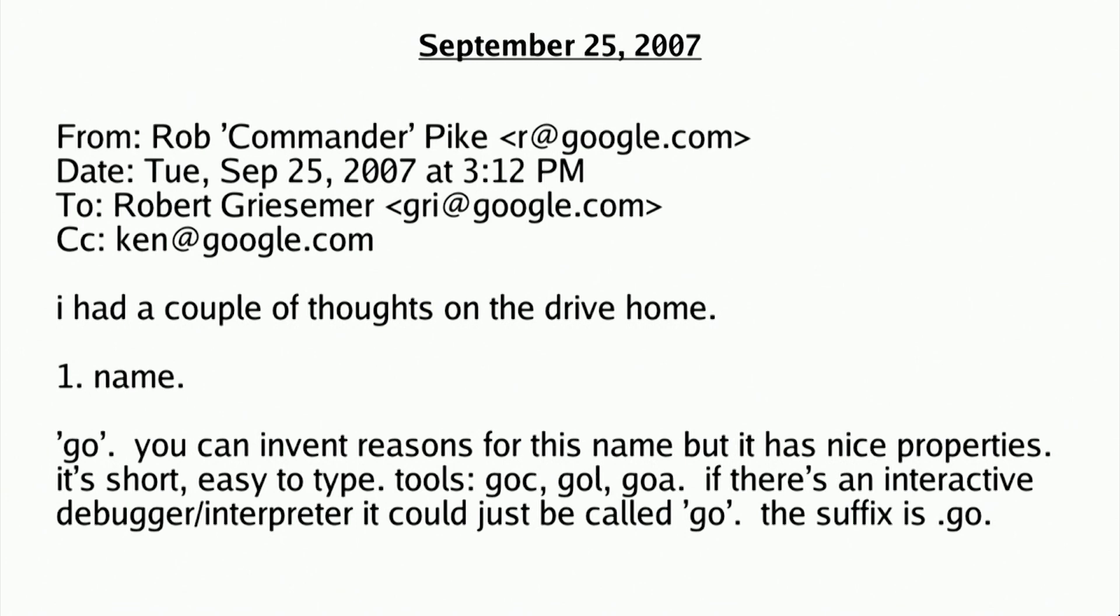On September 25, 2007, Rob Pike, Robert Griesemer, and Ken Thompson had been discussing a new programming language for a few days, and Rob suggested a name: Go.